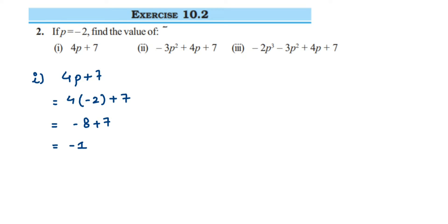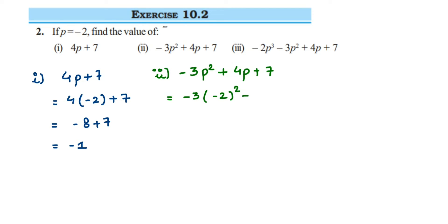Second question, we have minus 3p² + 4p + 7. In place of p, again we are going to substitute minus 2. So it is minus 3 times (minus 2)² plus 4 into minus 2 plus 7. So we are going to first open the bracket — multiply minus 2 into minus 2 — like minus 2 squared is 4.